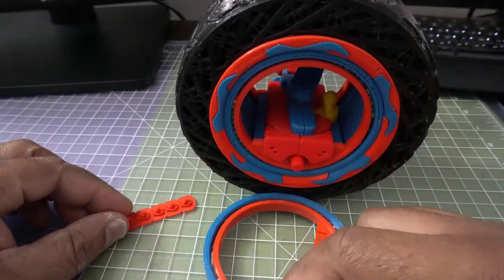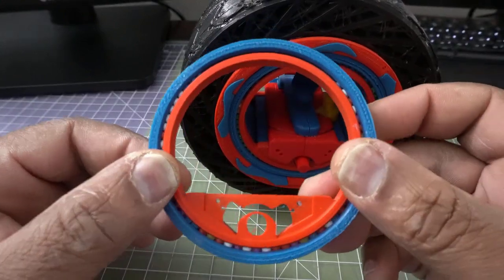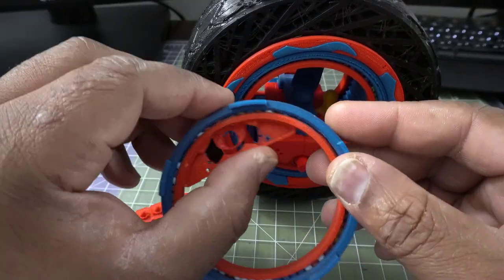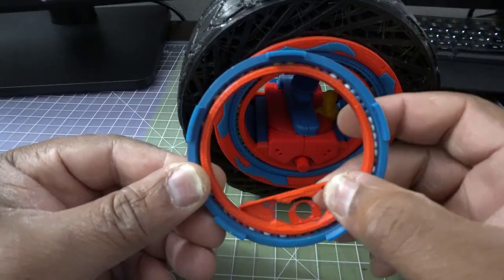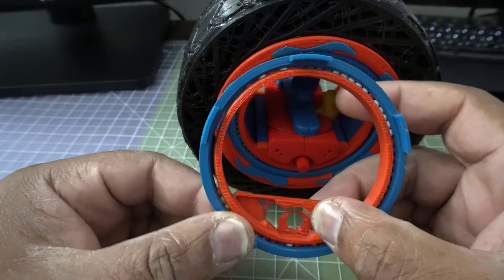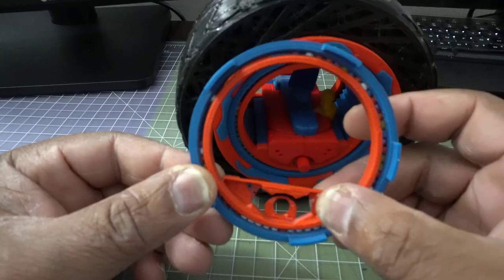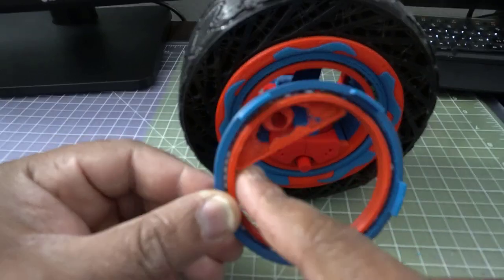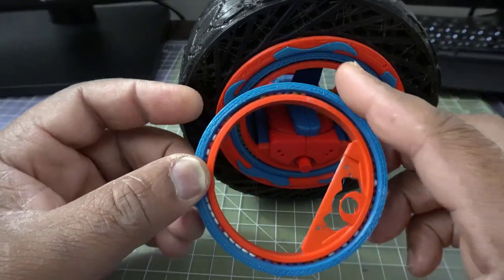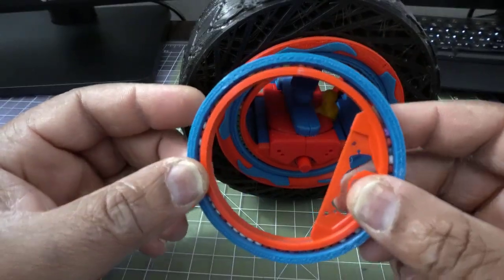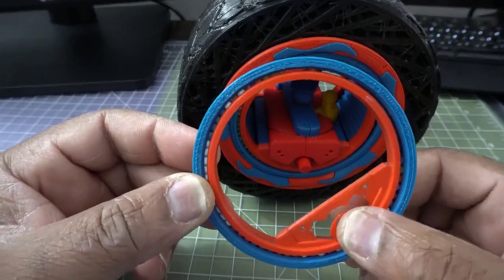I just want to take a second and talk about these bearings that I came up with for my project. I wanted to make a hubless wheel, and to do that you need special bearings. Special bearings cost a lot of money. If I wanted to order one of these bearings, which is about four inches or so from say McMaster-Carr, it would have cost me at least a couple hundred dollars for one. I need eight, two for each wheel.